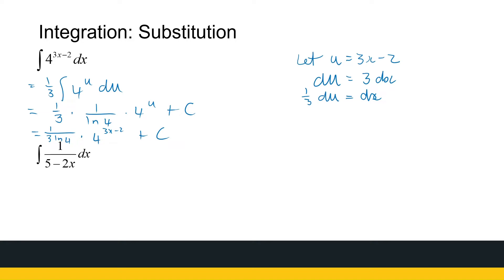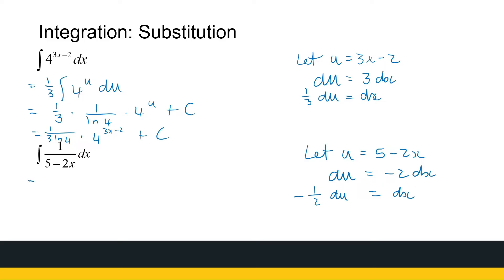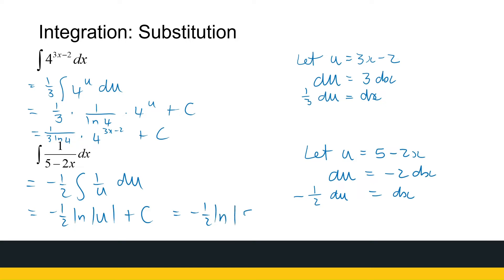Next one: 1 over 5 minus 2x. Let u be equal to 5 minus 2x. du is minus 2 dx. I don't have a minus 2 dx, but I've got a dx, so minus a half du is dx. So this integral becomes minus a half times the integral of 1 over u du. The integral of 1 over u is ln of the absolute value of u plus c. So we've got minus a half ln of the absolute value of 5 minus 2x plus c. You can differentiate to check that your answer is right.